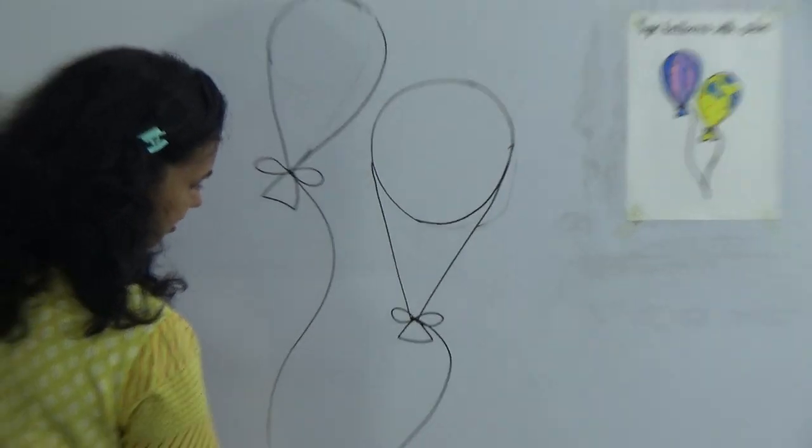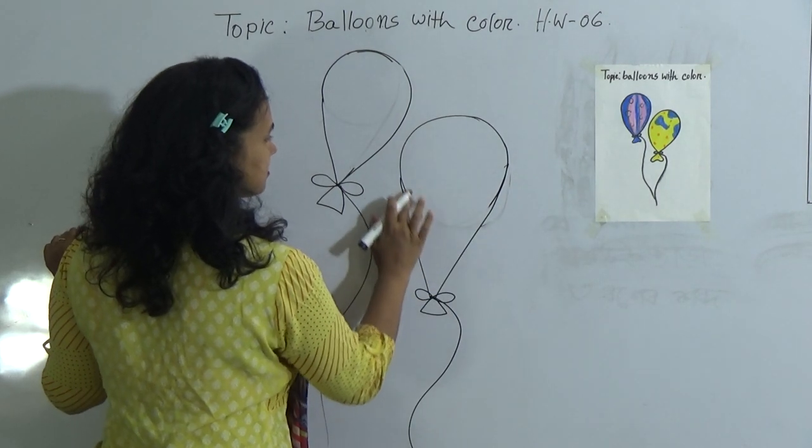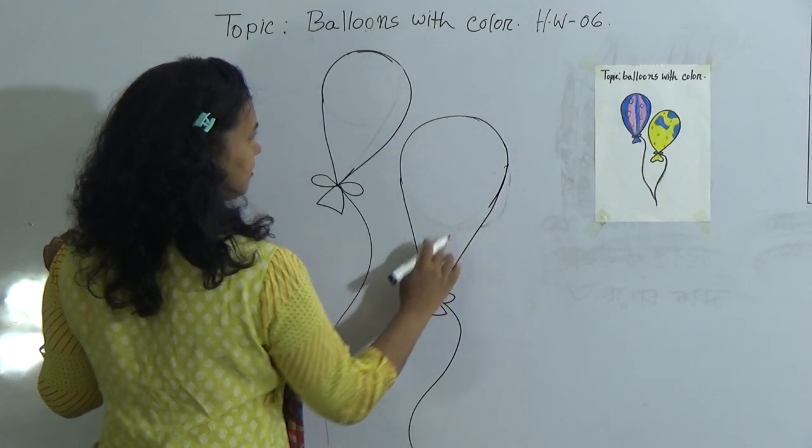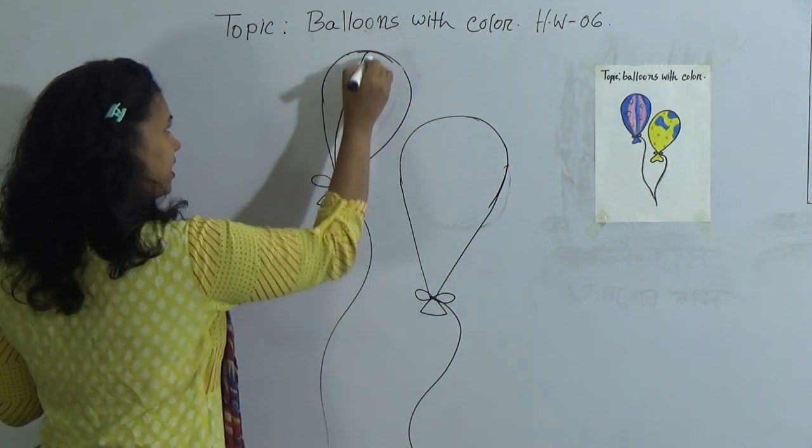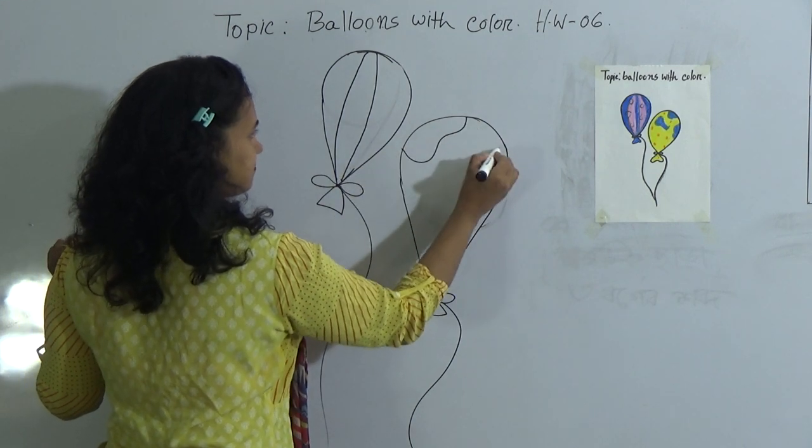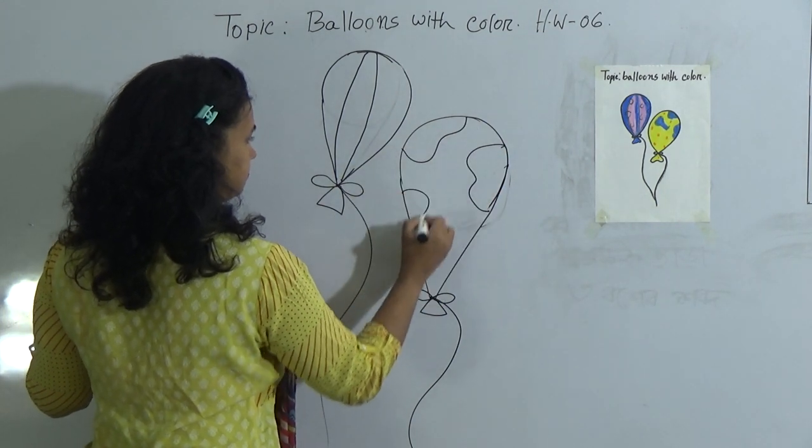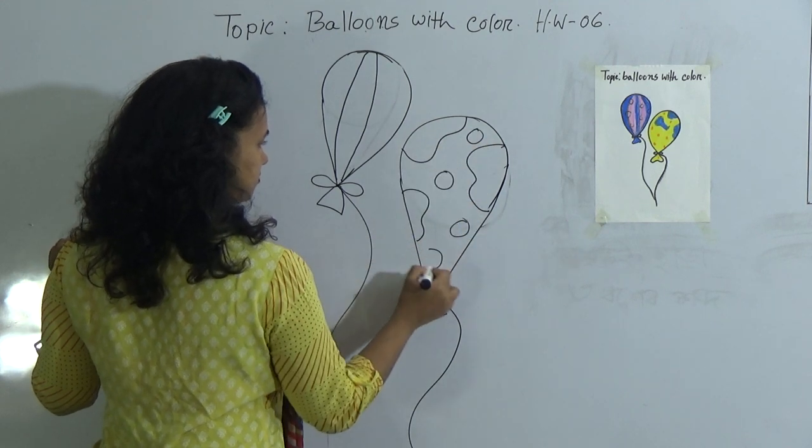And draw the line again. After that you will remove these lines. For your decoration, you can draw some lines from here to here and give like this. Circles also.